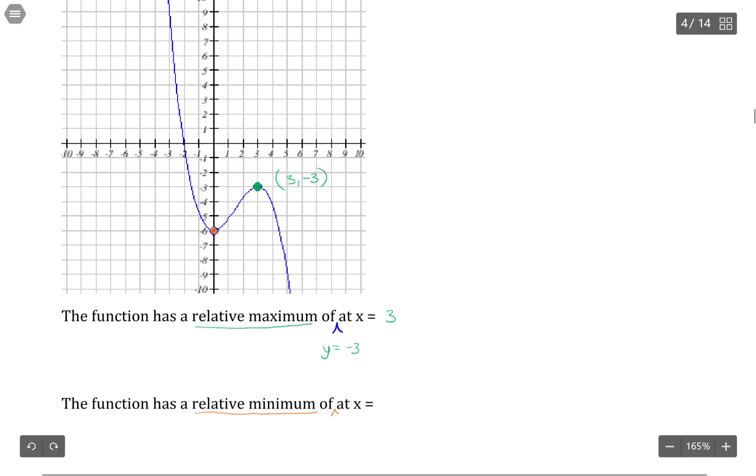So this right here, for instance, that's the smallest in this small window of values surrounding. So that is a relative minimum. So we have a relative minimum of negative 6 at x equals 0 because the coordinates here are 0, negative 6.